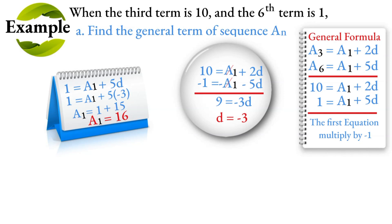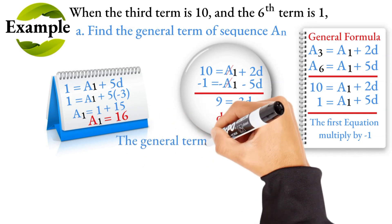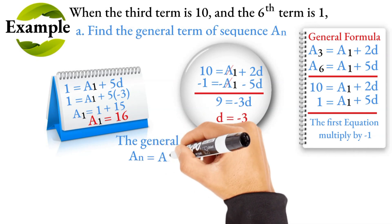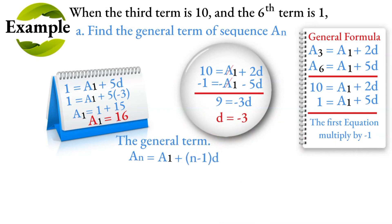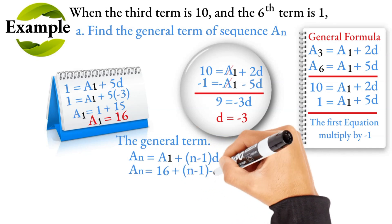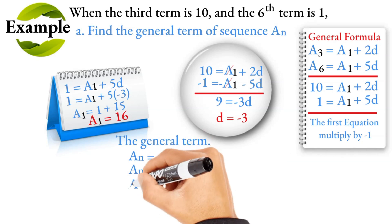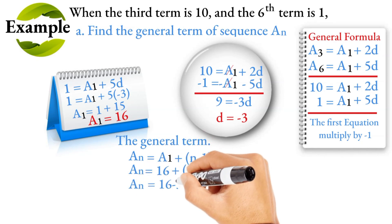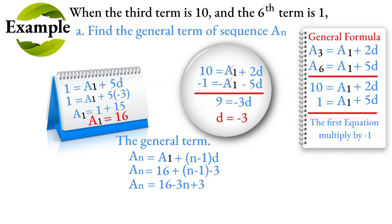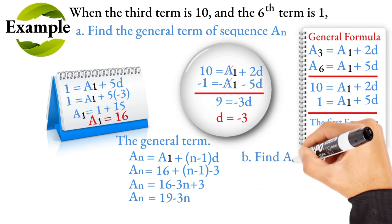Since D equals minus 3, substituting back: 1 equals A1 plus 5 times minus 3, so 1 equals A1 minus 15, therefore A1 equals 16. Wait — correcting: A1 is 61. So the general term AN equals A1 plus (N minus 1) times D equals 61 plus (N minus 1) times minus 3, which simplifies to 90 minus 3N.